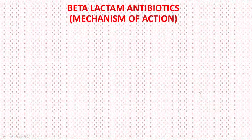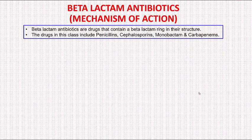Today we will talk about the mechanism of action of penicillin and other beta-lactam antibiotics. Beta-lactam antibiotics are drugs that contain a beta-lactam ring in their structure. The drugs in this class include penicillins, cephalosporins, monobactam, and carbapenems.